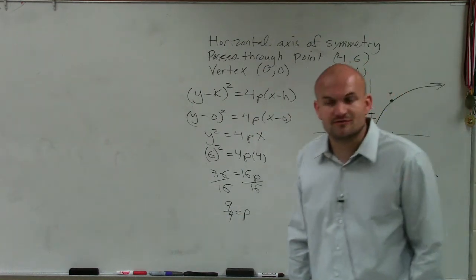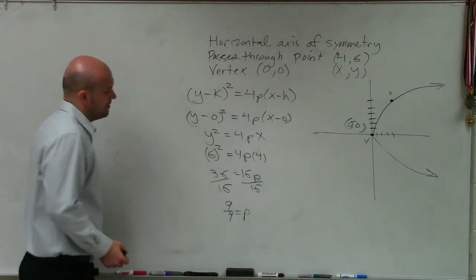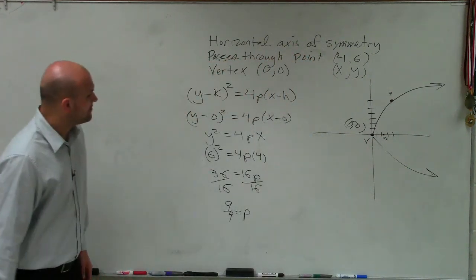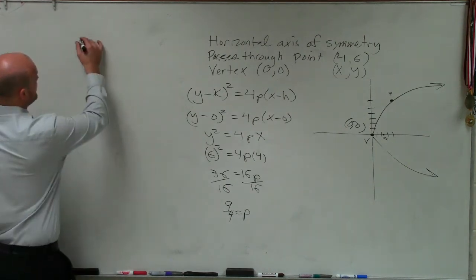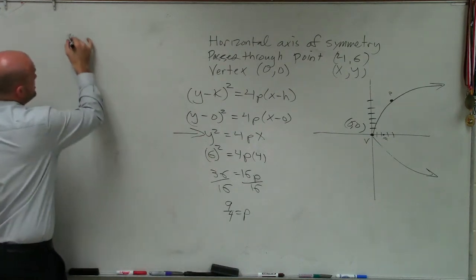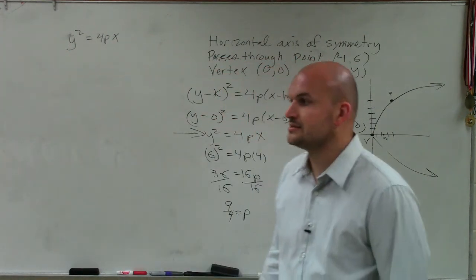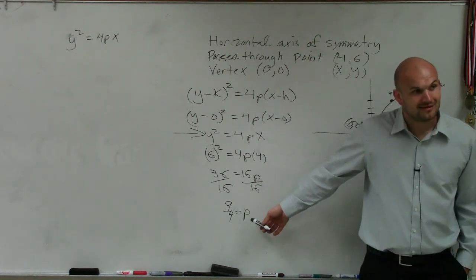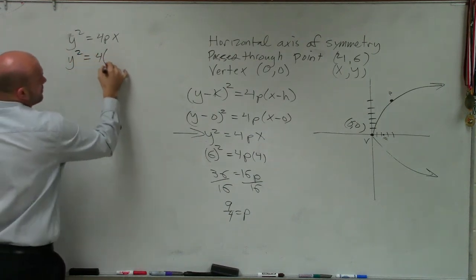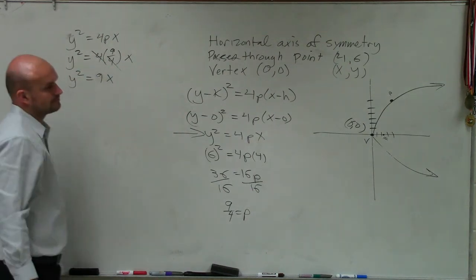So again, their question is find the standard form of the equation, right? So to find the standard form, p is 9 fourths, which would be 1, 2, and 1 fourth. So that's your focus. But they want us to find the standard form of the equation. Let's just go back to this standard form of the equation. We already know the vertex is at 0, so we don't need to write the minus 0. Now, do we know the value of p? Yeah. So let's plug in the value of p and have x and y represent all of the x and y's of the parabola. And there we go.